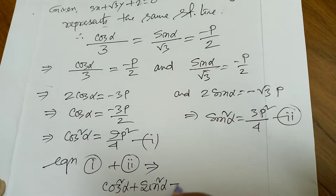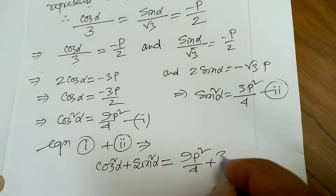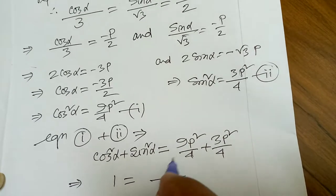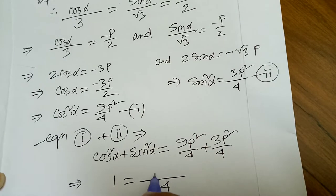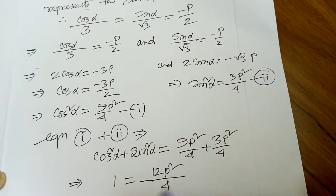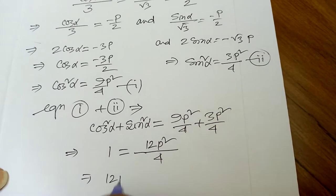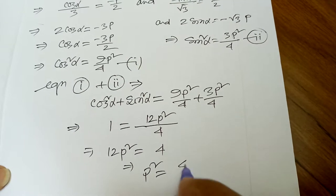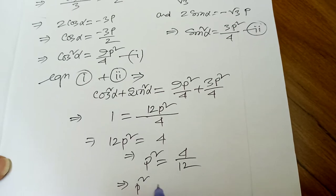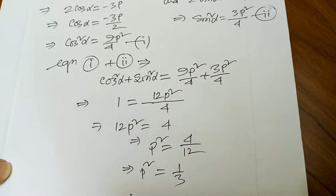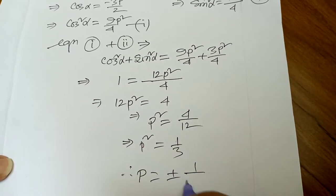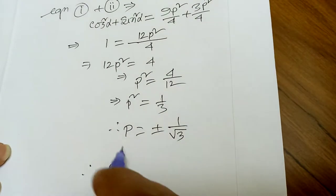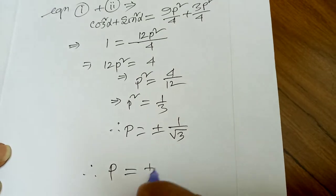Adding equations 1 and 2: cos²α + sin²α = 9p²/4 + 3p²/4. Therefore 1 = 12p²/4, which gives p² = 4/12 = 1/3. So p = ±√(1/3). That is our solution — the required value of p is ±1/√3.